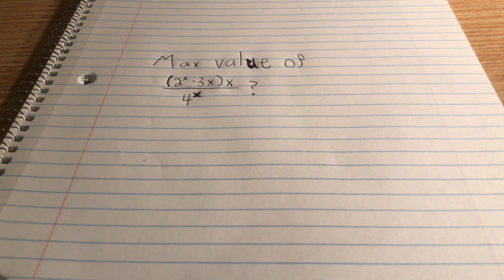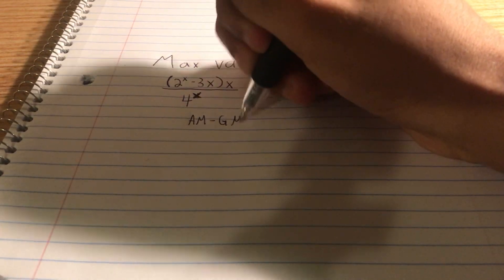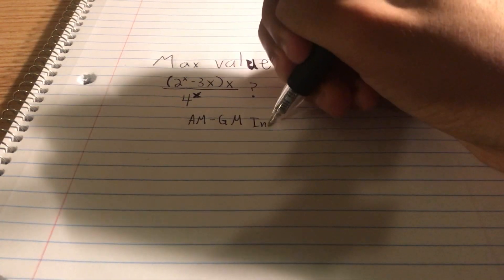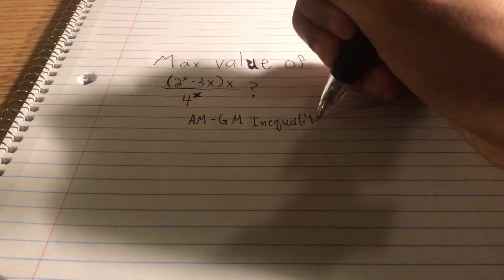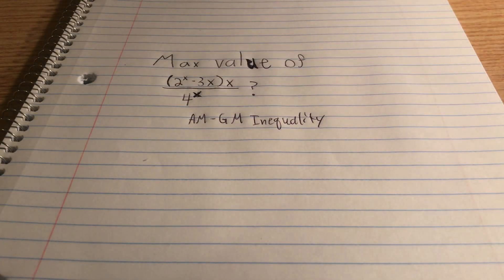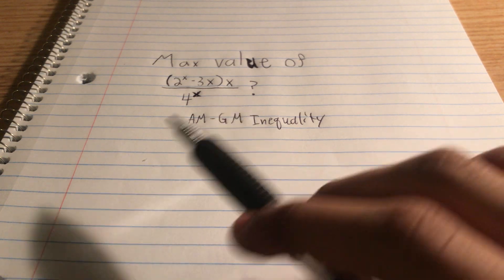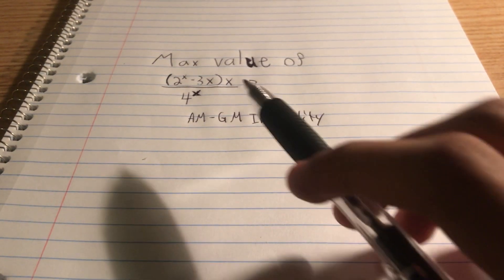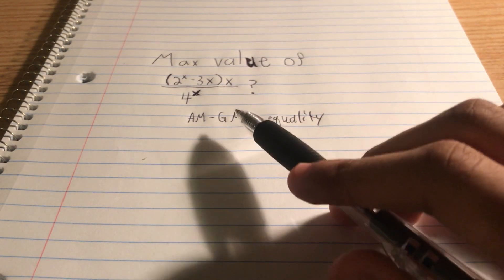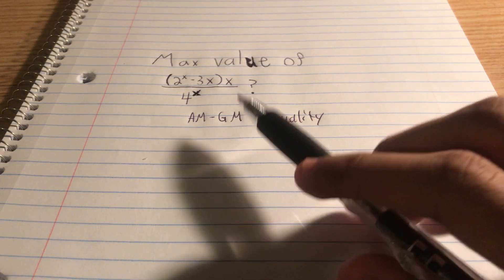Now, the best way, in my opinion, to solve this is using the AM-GM inequality, which I will be talking about in a later video. I'll be making a video on that. So what the AM-GM inequality is, is that it's saying that the arithmetic mean of two terms, or any number of terms, is always greater than or equal to the geometric mean of those terms.